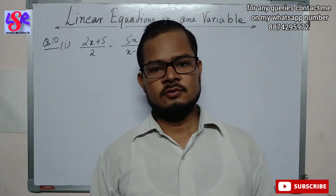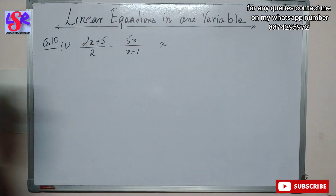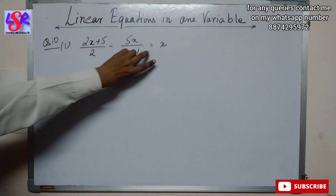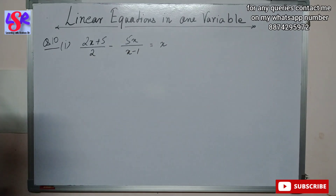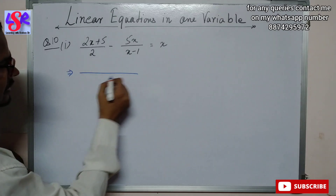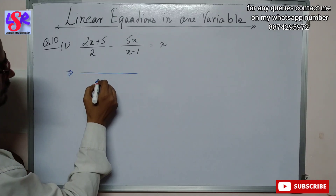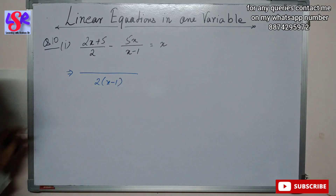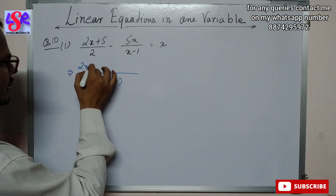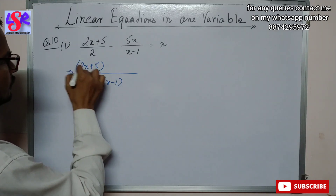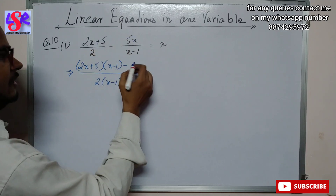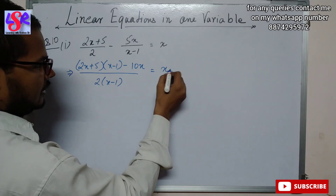Now moving to question number 10, first part. Here we have (2x + 5)/2 - 5x/(x - 1) = x. We take the LCM on the LHS, which gives denominator 2(x - 1). Cross multiplying: (2x + 5)(x - 1) - 2 × 5x = x × (2x - 1).